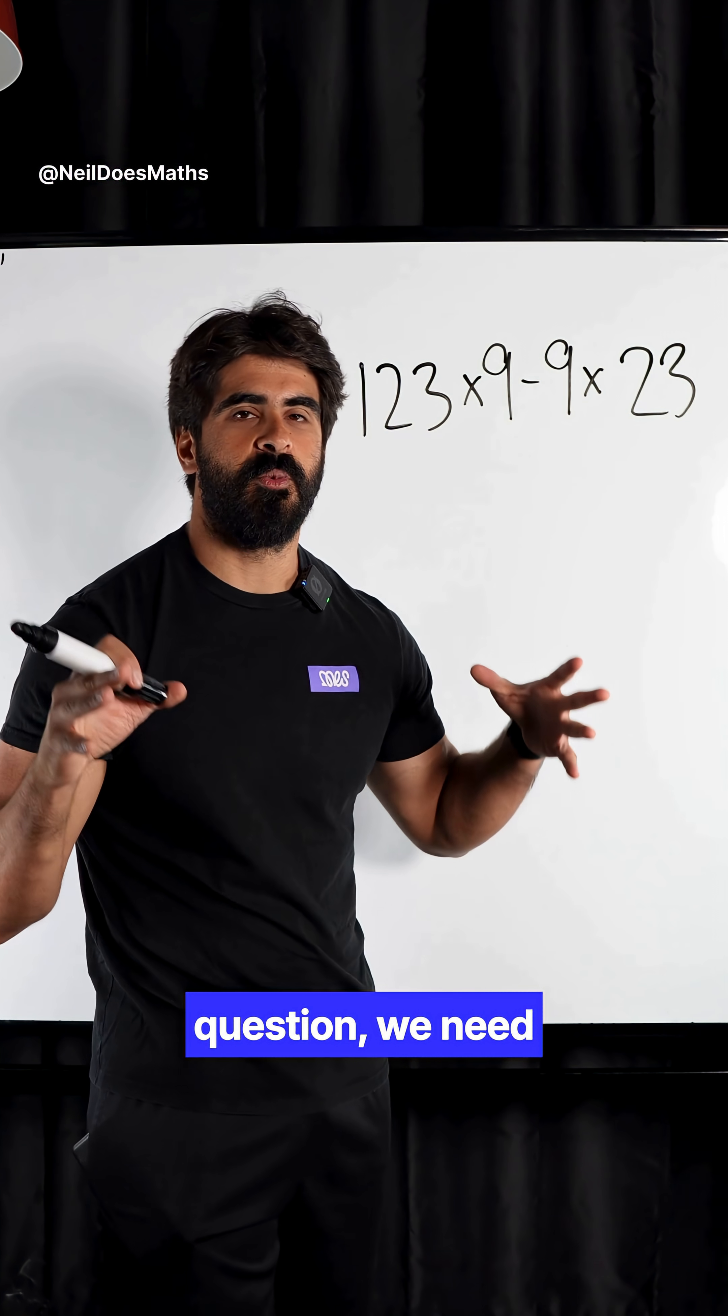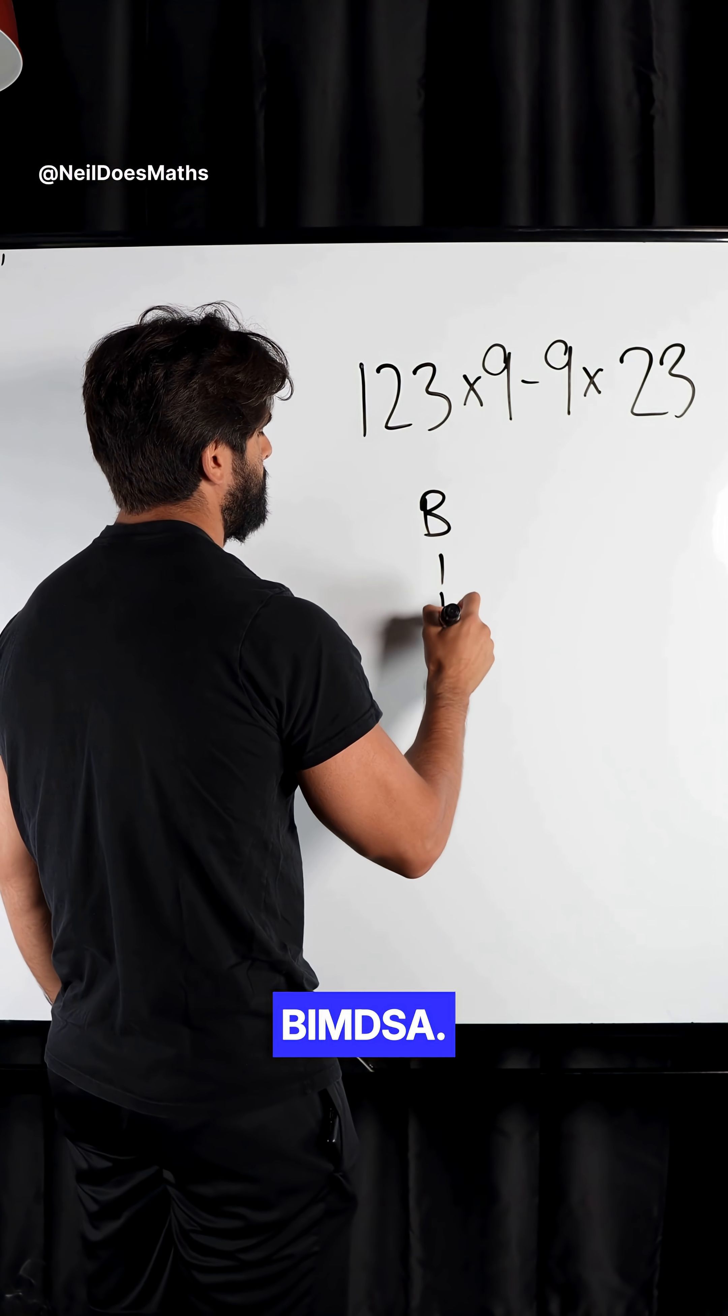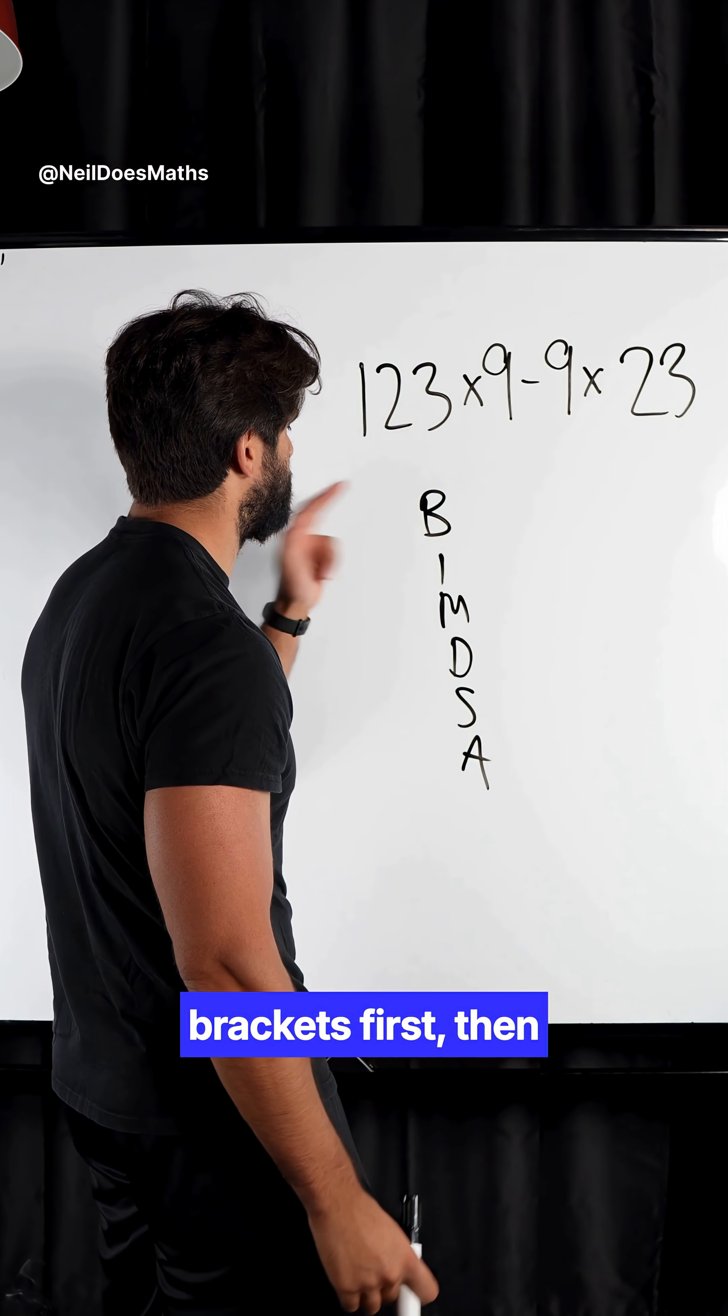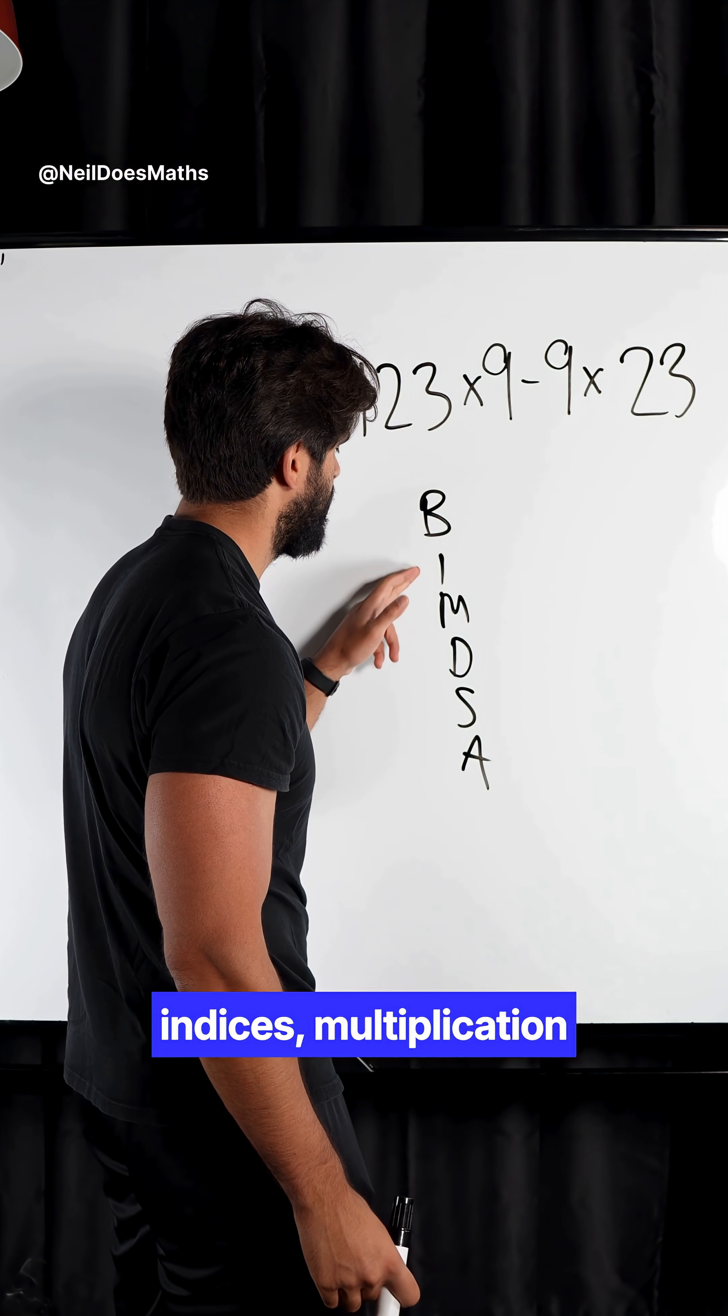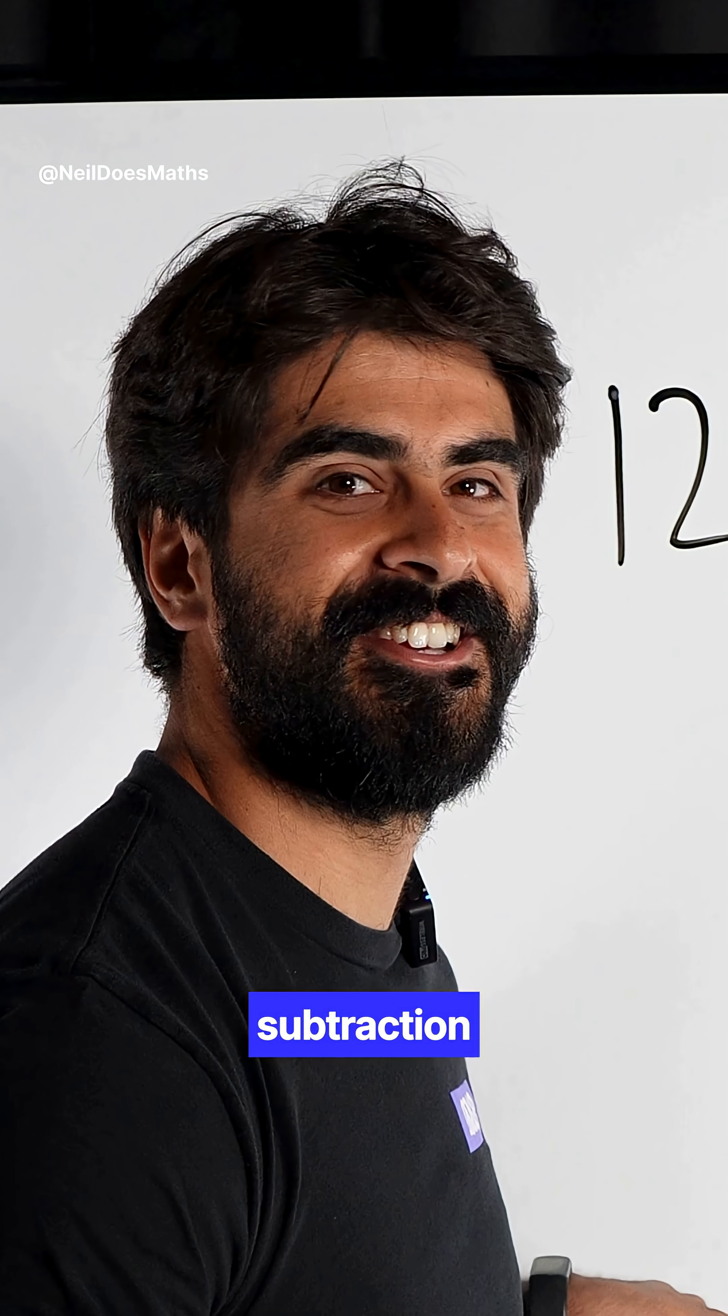In order to answer this question, we need to look at our order of operations, aka BIMSA. Now, this tells us that we need to address brackets first, then indices, multiplication and division. These can be done together. And subtraction and addition.